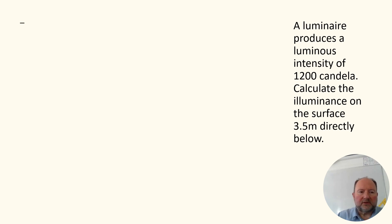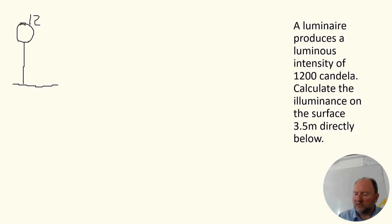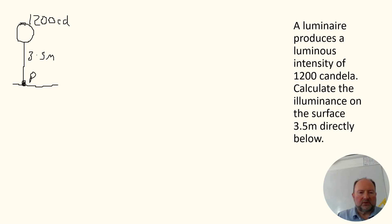I like to visualize things, so I've drawn a diagram: a light source falling onto a surface. The light source is producing 1200 candela, and it's 3.5 meters above the surface. We're trying to find the illuminance at that point, point B.